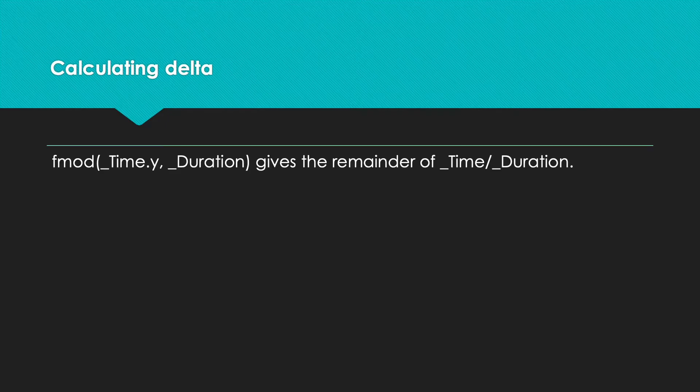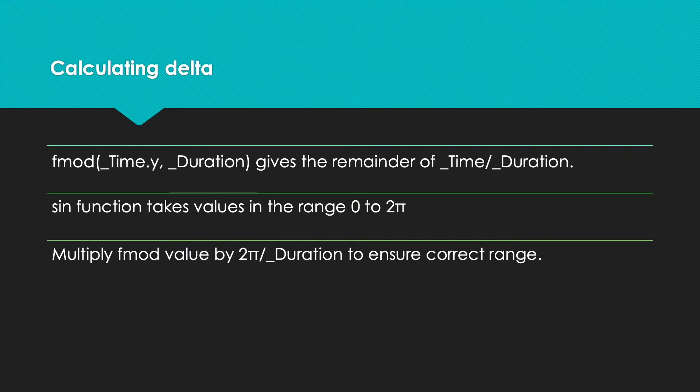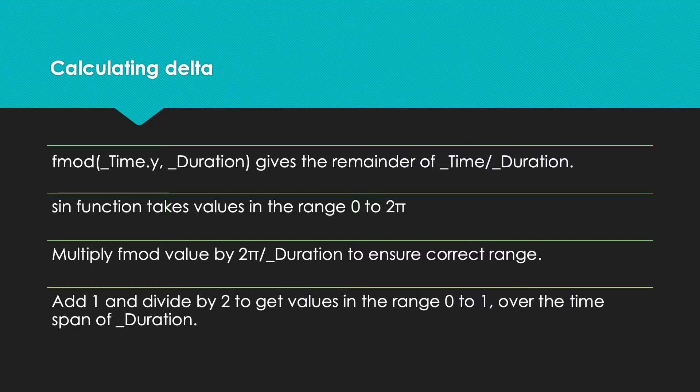First we get the remainder of _Time.y divided by _Duration using the fmod function. The sine function needs parameters in the range 0 to 2π. The fmod value will be in the range 0 to _Duration. To get the correct range, we multiply by 2π divided by _Duration.